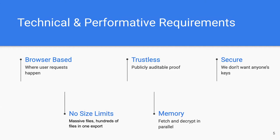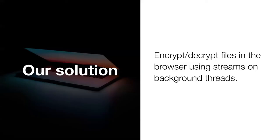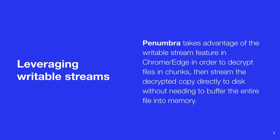If we were decrypting on the browser, this couldn't block the main thread and create a choppy interface for the end user. So ultimately, our solution was to build an open source library called Penumbra. Penumbra implements end-to-end encryption and decryption in the browser on files that may not fit into the memory of the consumer's machine. Penumbra takes advantage of a new writable stream feature in Chrome and Edge in order to decrypt files in chunks. We stream files from a backend and stream that through a decryption algorithm that decrypts on the browser without having to buffer the entire file into memory.